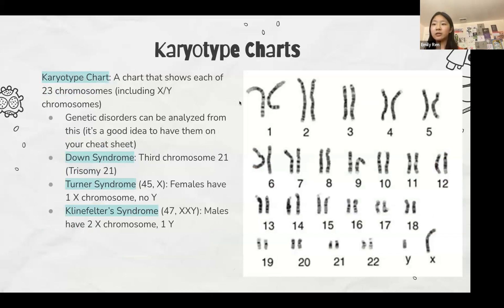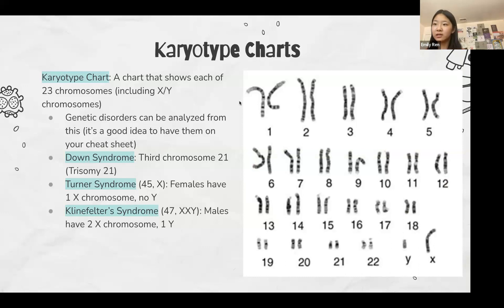Next we have karyotype charts. Usually a question will show you a chart with some sort of defect. A karyotype chart shows all 23 chromosomes including X and Y chromosomes, and they ask you what disorders a person has based on the chart. Three of the most important disorders are Down syndrome, Turner syndrome, and Klinefelter syndrome. Males are XY and females are XX.